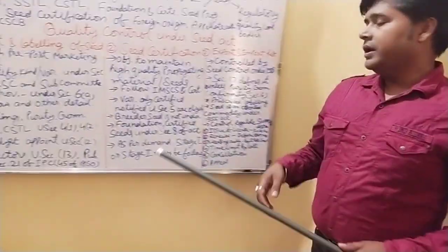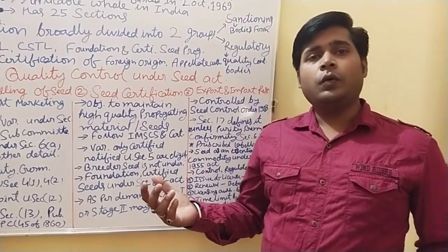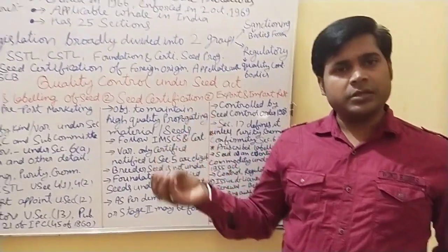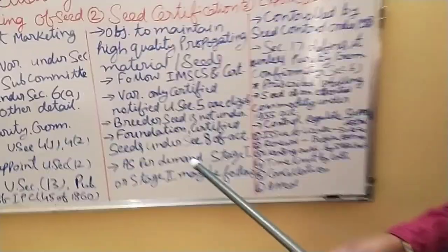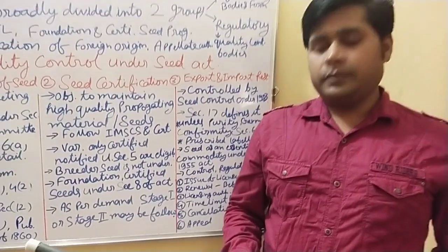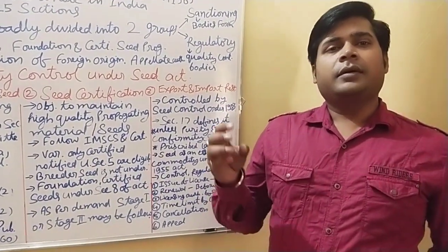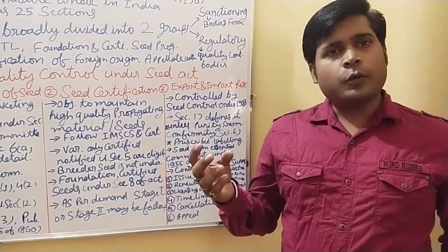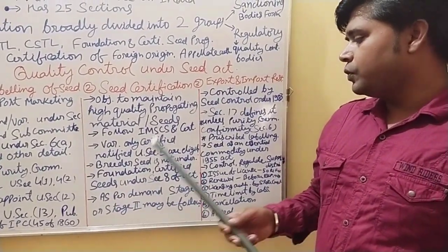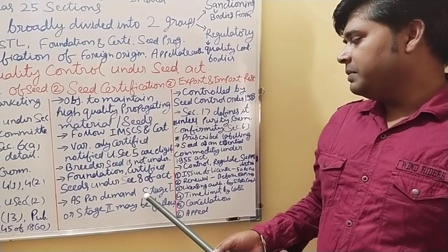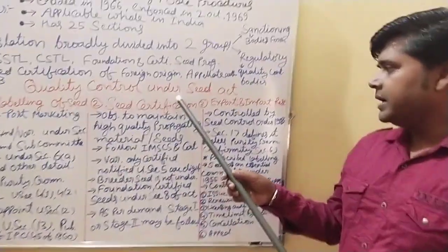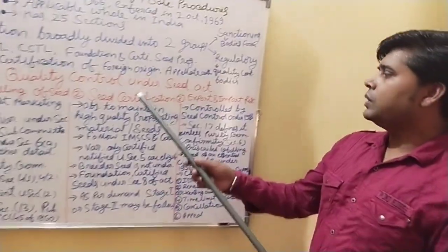Certified seeds are of two classes: first, certified foundation seed, and second, certified seed. As per demand, Stage 1 or Stage 2 production may be followed — if a seed variety is in short supply, we may go to Stage 2 process for production; otherwise we stick to the Stage 1 process for the seed production cycle. This is the second quality check under seed certification for quality control under the Seed Act.